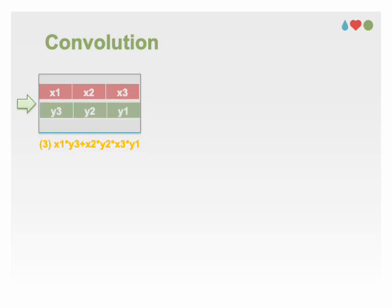In this case, we have three overlaps which correspond to the indices x1, y3, x2, y2, x3, y1. The convolution is calculated by summing these products.